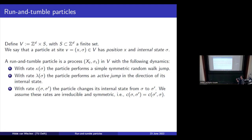The last dynamic is the tumbling — that is the changing of internal states. This is done with certain rates to go from internal state sigma to sigma prime. These rates we assume to be irreducible and also symmetric, where the symmetry is more of a convenience. We can also assume that the net flow between every layer is zero at every position, but let's just assume symmetry for now — it's way easier.